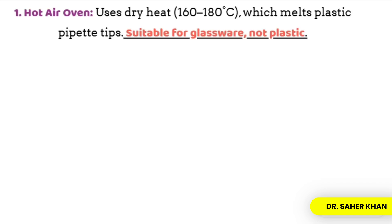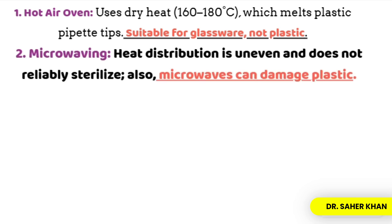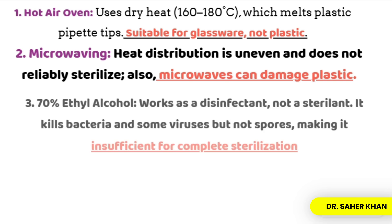Let's analyze the options one by one. Number one, hot air oven — this method uses dry heat, which is too high for plastic, so this is not a suitable method. Second, microwaving — microwave heating can be uneven and it is not suitable for sterilization. Third, 70% ethyl alcohol — alcohol acts as a disinfectant, but it does not eliminate spores, making it insufficient for complete sterilization.